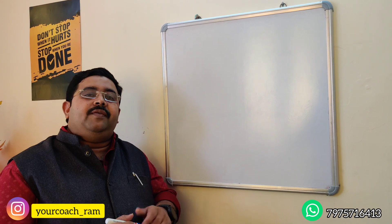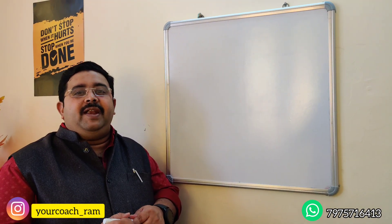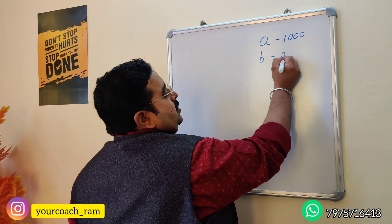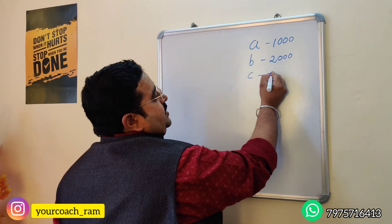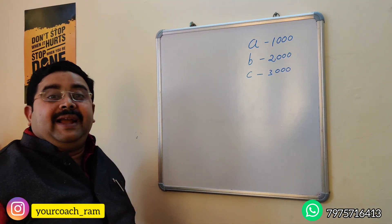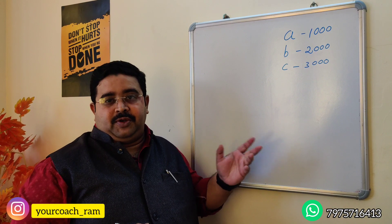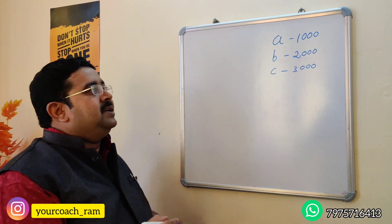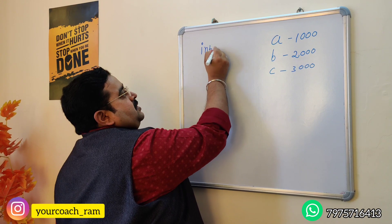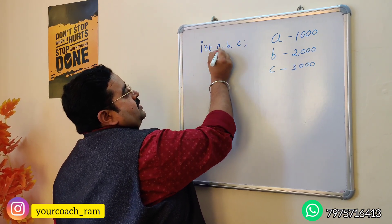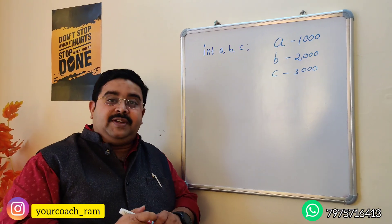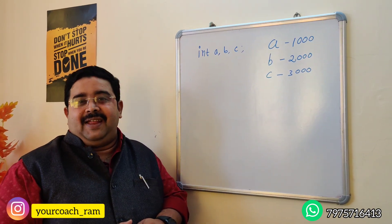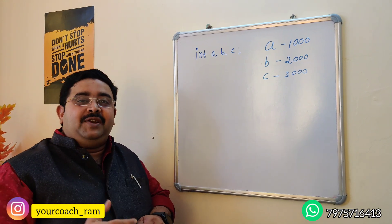In one interview they asked a simple question: variable A is used 1000 times in the program, variable B is used 2000 times, and variable C is used 3000 times — declare the variables, which will hold integer type data. Almost 98% of students answered: 'int a, b, c;' — and almost 98% of students got rejected in the first round.